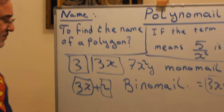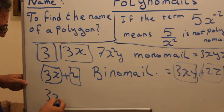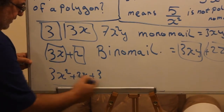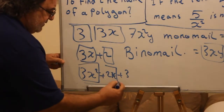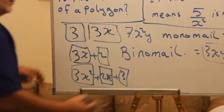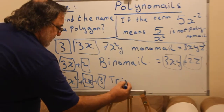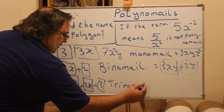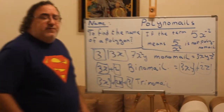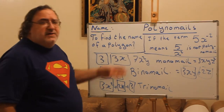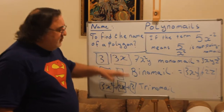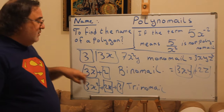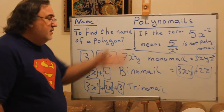Now, if we have three terms: 3x squared plus 2x plus 3. This is the first term, this is the second term, and this is the third term. We call it trinomial. So to summarize: one term — monomial; two terms — binomial; three terms — trinomial; more than three — it's a polynomial.